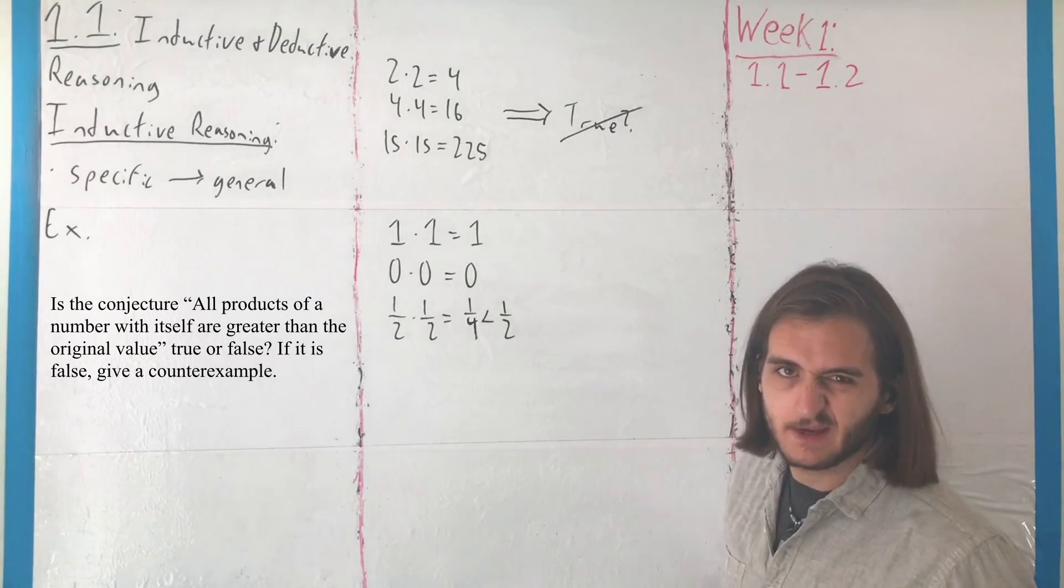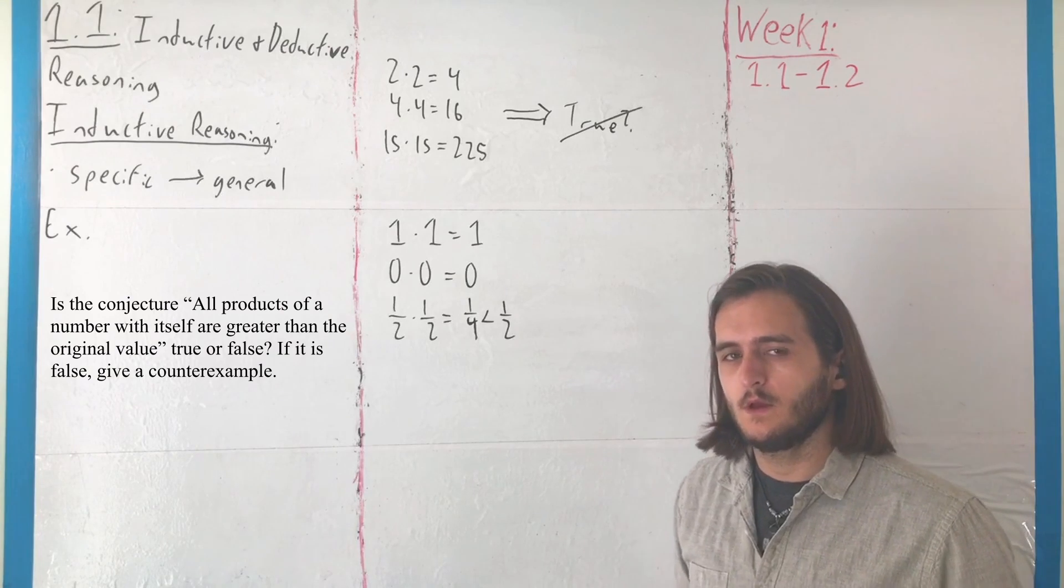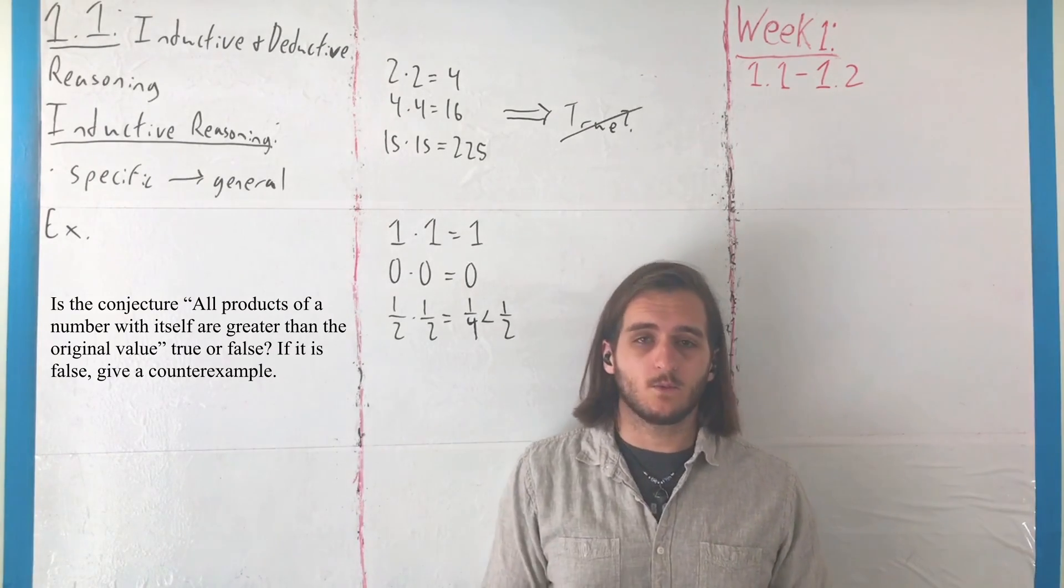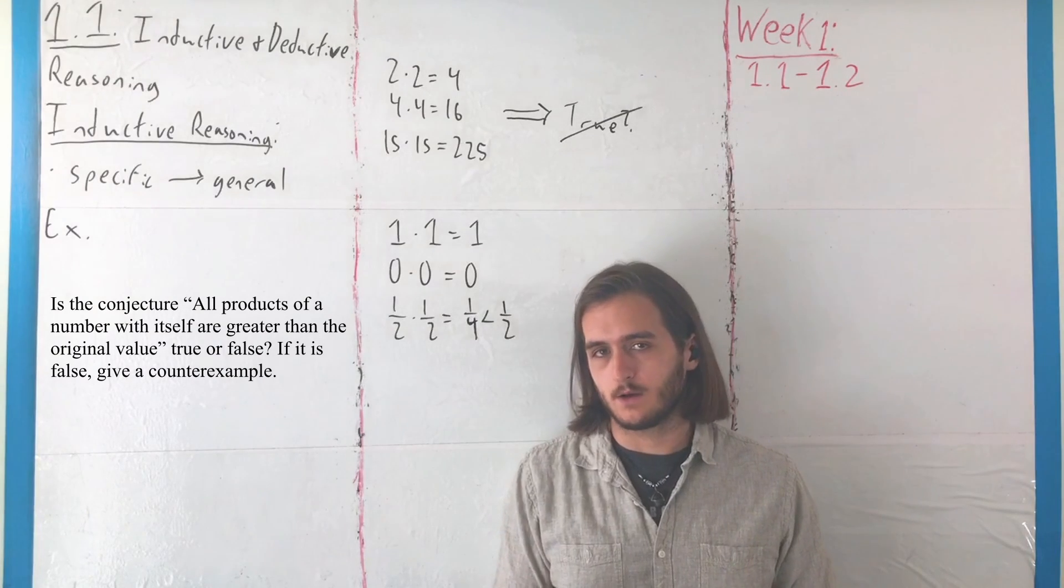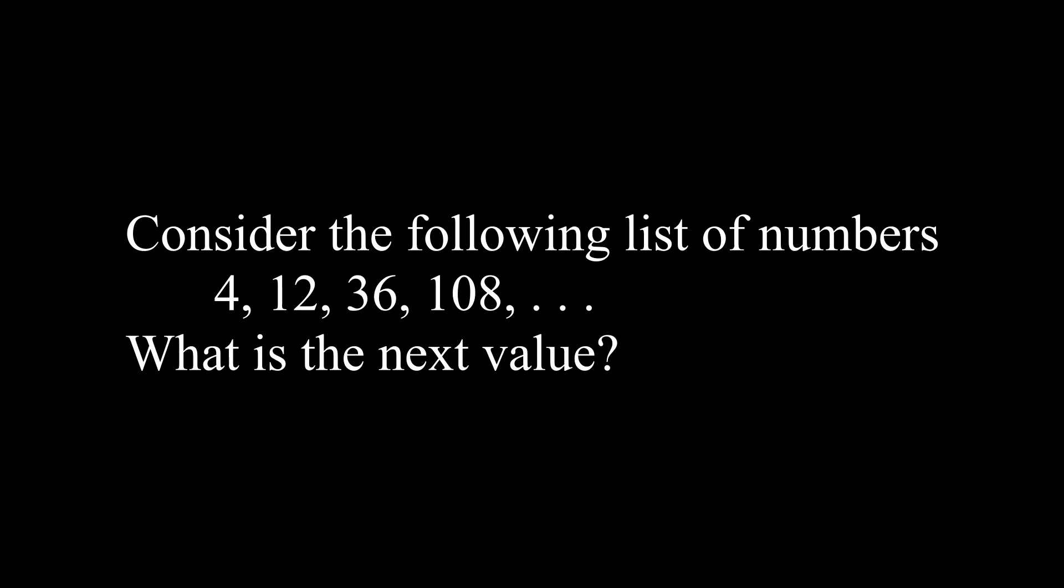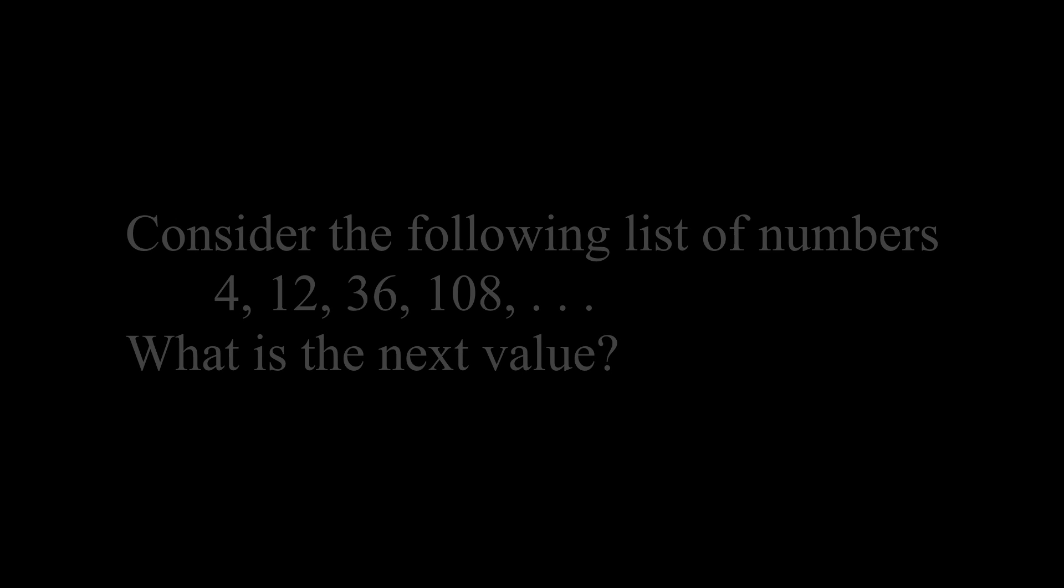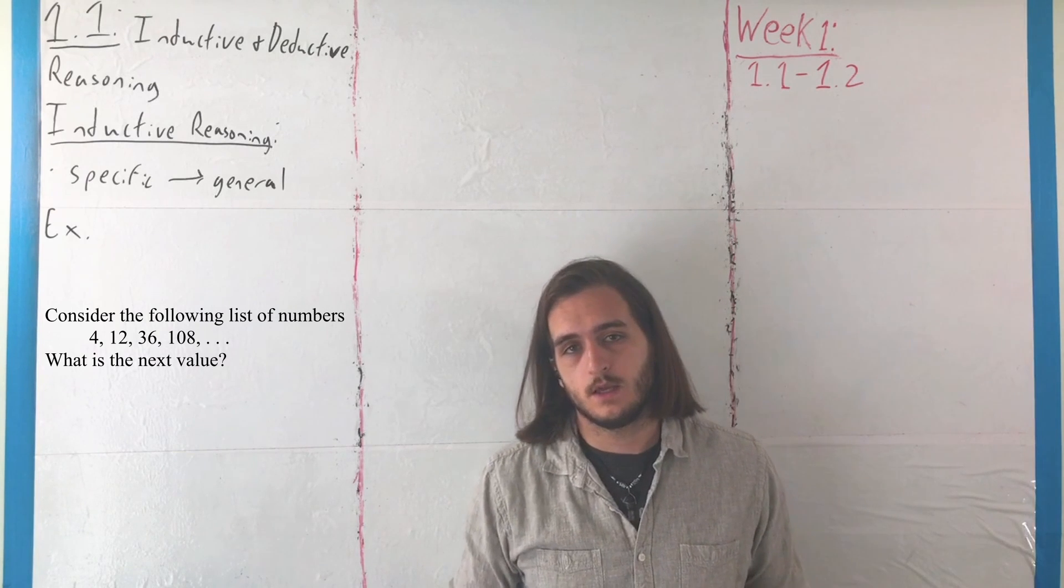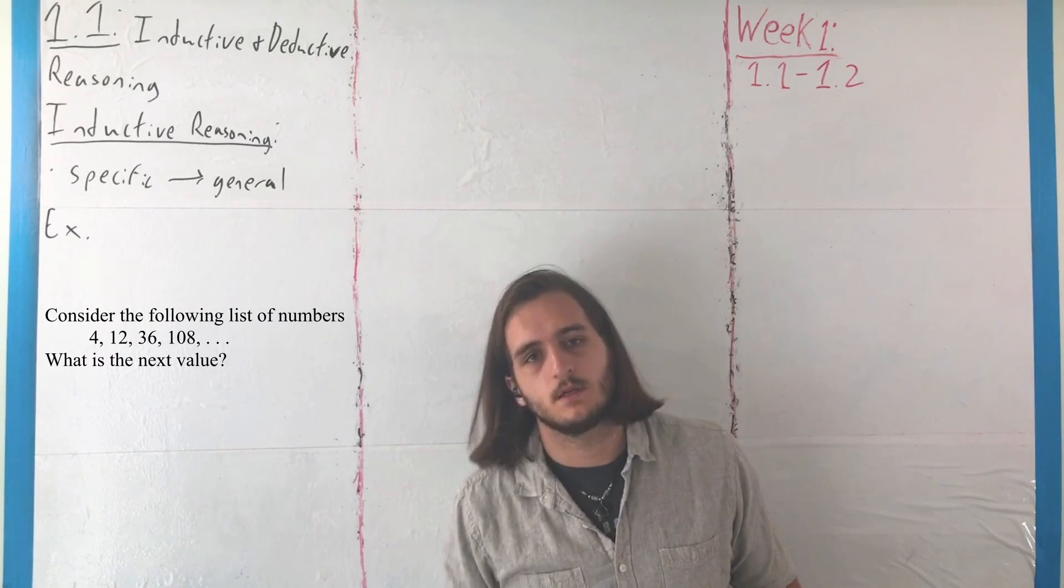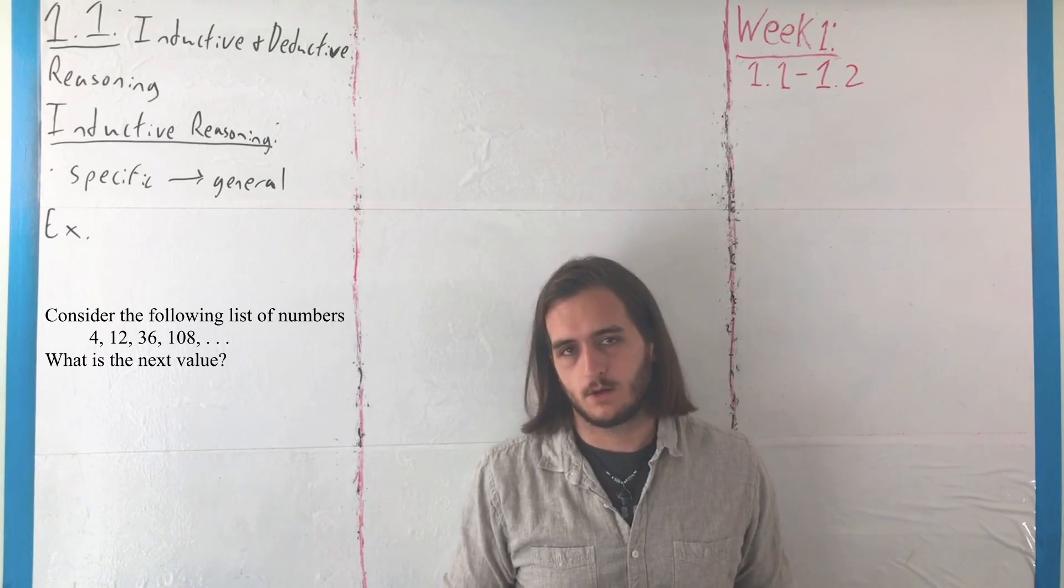But, for what we have as it is, it's not good enough. So, let's get one more example here in terms of the sort of thinking that we can have when we're talking about inductive reasoning. For our second example, we want to consider the list of numbers 4, 12, 36, 108, and so on, to try and figure out what the next value will be. What we can do here is think about what sort of pattern we're forming. Because again, inductive reasoning is all about noticing a pattern.